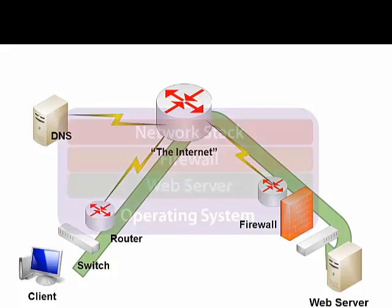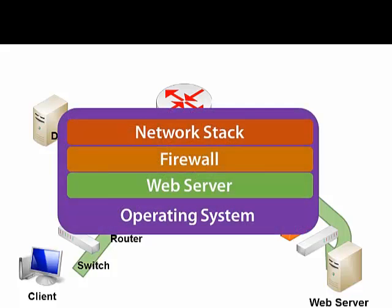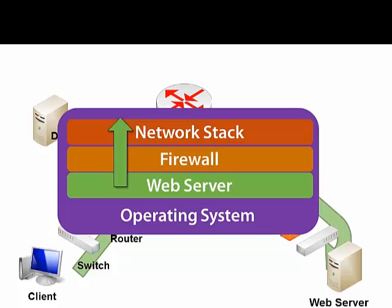As it reaches that web server, it enters the networking stack of the operating system. There's usually a host-based firewall that it has to traverse, and then finally it reaches the process that's the actual web server. Then this process is reversed — the data is sent back to the client, and the web page renders on the client machine.